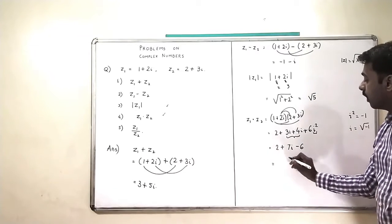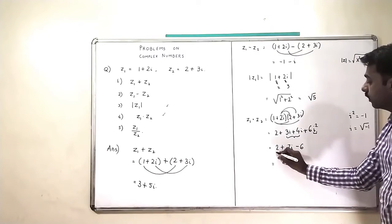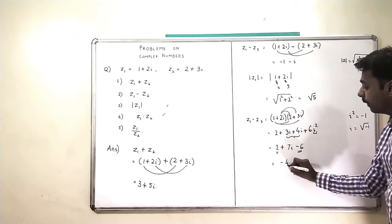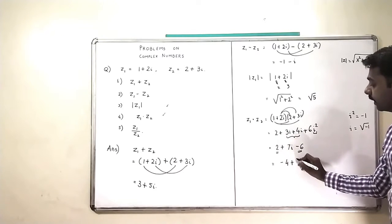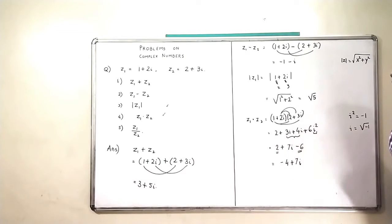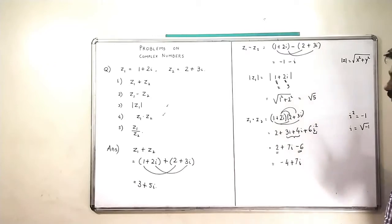And therefore I will get 2 and minus 6 will become minus 4 plus 7i. This is Z1 times Z2.